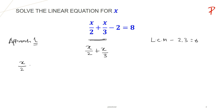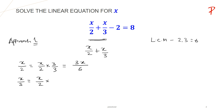For x upon 2, we have to make the denominator 6. So what I am going to do is multiply both numerator and denominator by 3, so that at the numerator I have 3x and at the denominator there is 6. Same way for x upon 3, we are going to multiply numerator and denominator both by 2, so that at the numerator we have 2x and at the denominator we have 6, since 3 multiplied by 2 is 6.